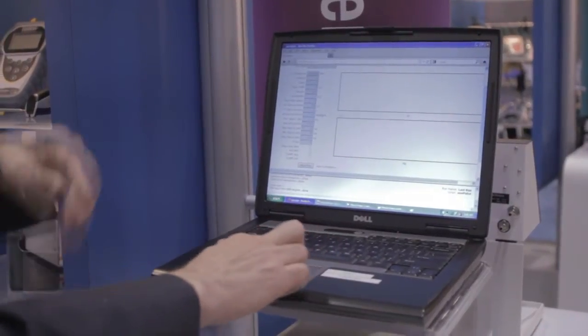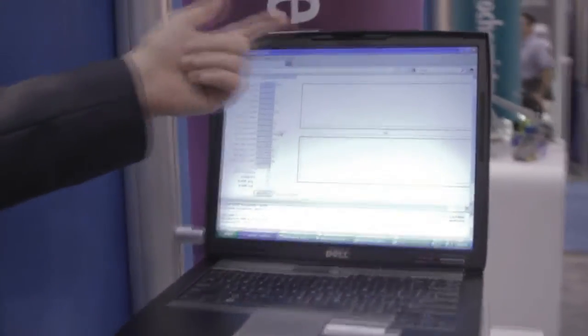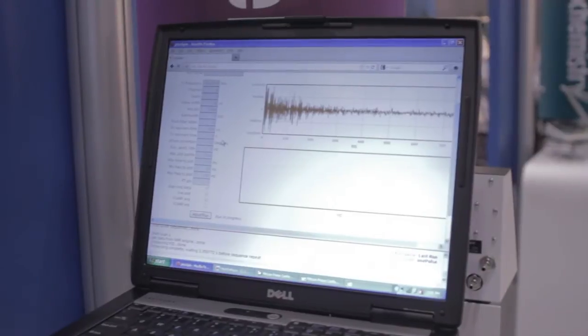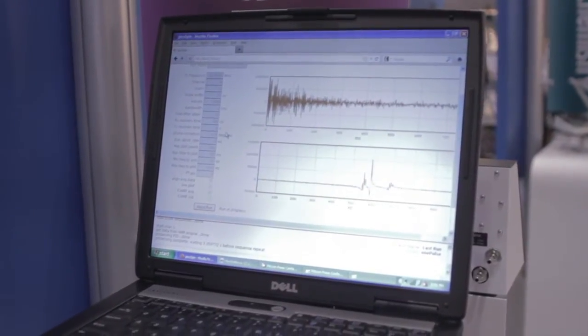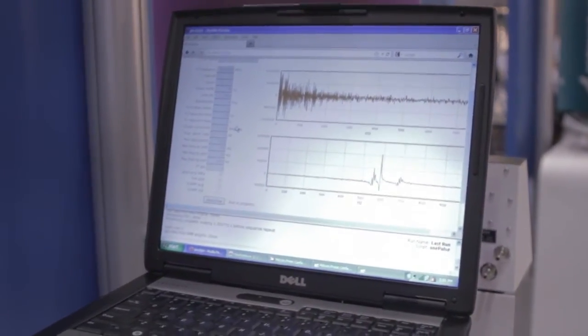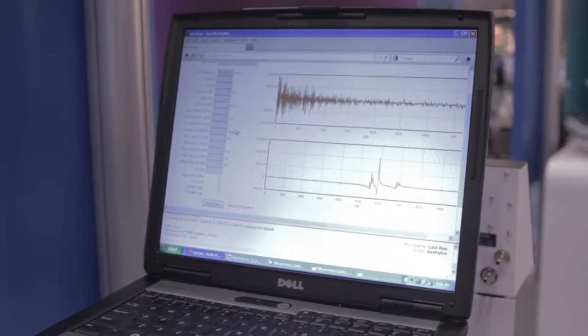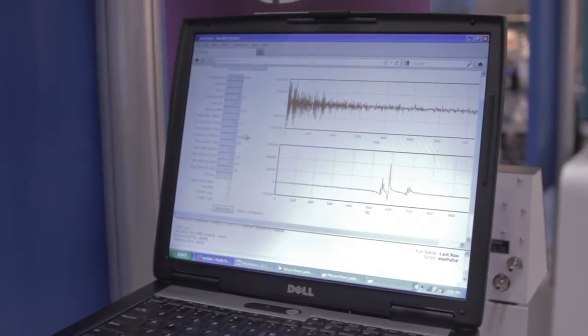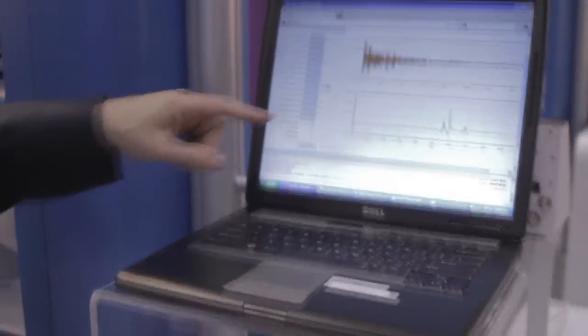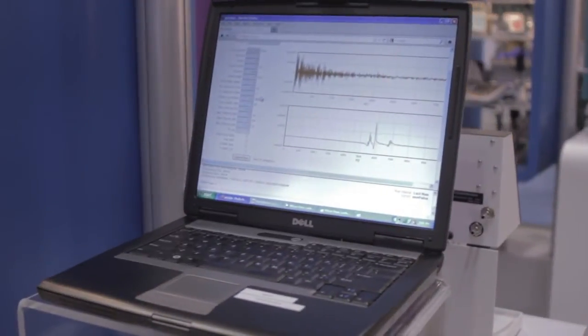And you'll see in the top screen the free induction decay of pulsed NMR. It looks like noise but it's not. It's really the beating signal of a whole bunch of lines in the spectrum that are nearby. And they make a beating signal that's more complicated looking. And then down in the bottom you see the spectrum.